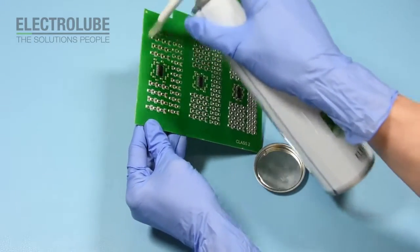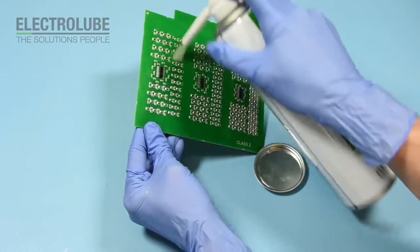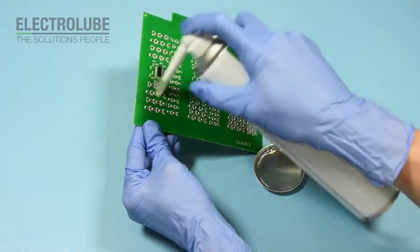Tilt the board and start at the top working downwards so that the contaminants are washed down and off the board.